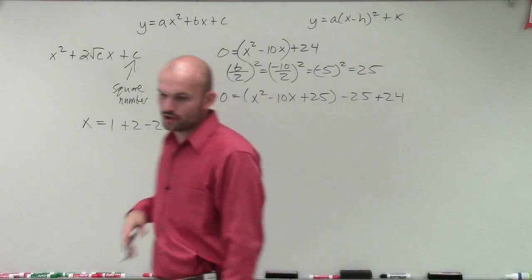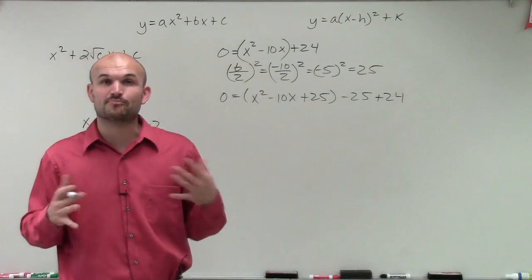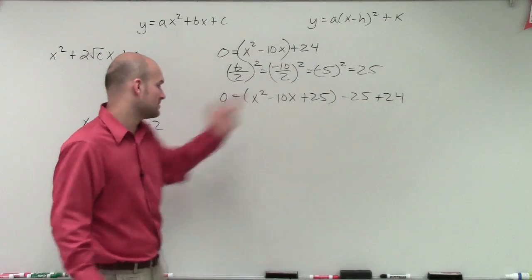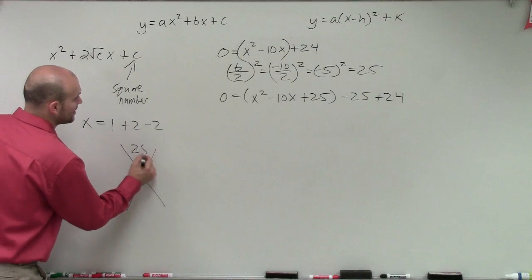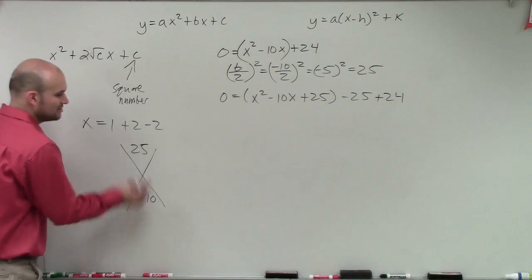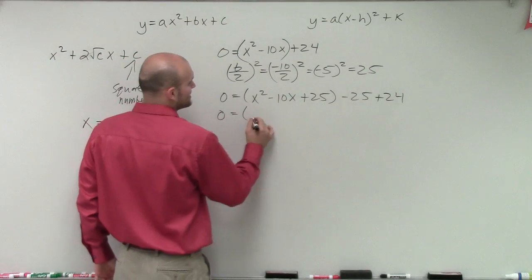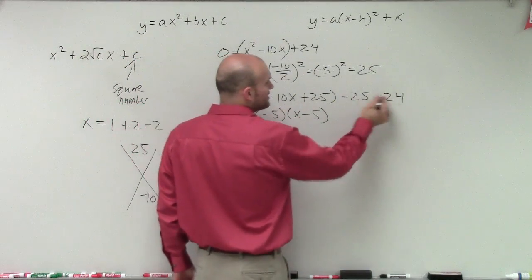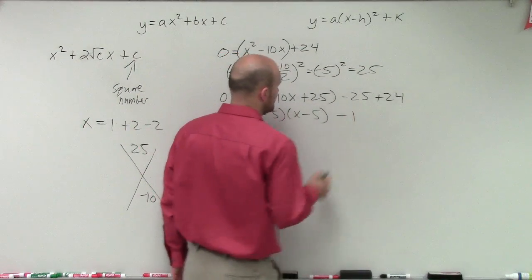All right, so now I created my perfect square trinomial. Now what I need to do is factor this down. And we practice a lot of factoring perfect square trinomials. And remember, perfect square trinomials is you need to make sure your c is a squared number. And you can use the diamond method if you want, or the x method, 25, negative 10. Again, what two numbers multiply to give you 25, add to give you negative 10. And what we get is we get x minus 5 times x minus 5. And then negative 25 plus 24 is going to equal a negative 1.